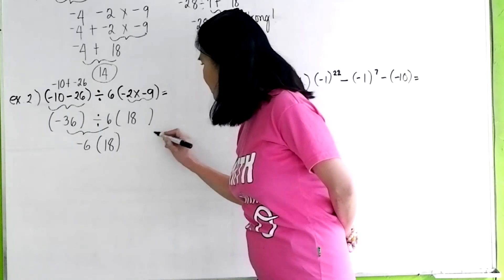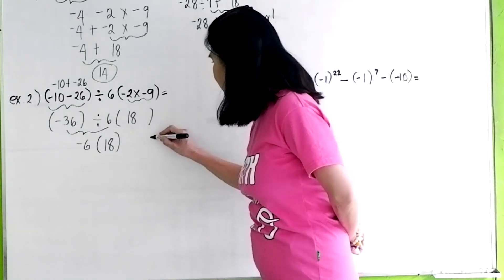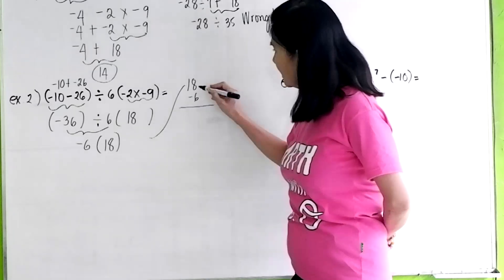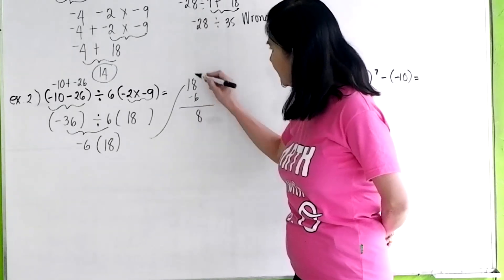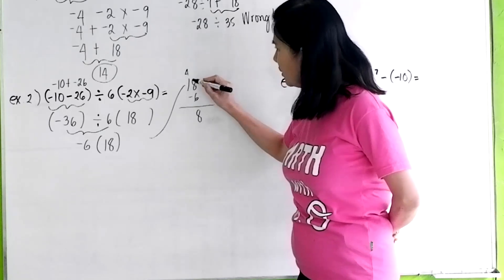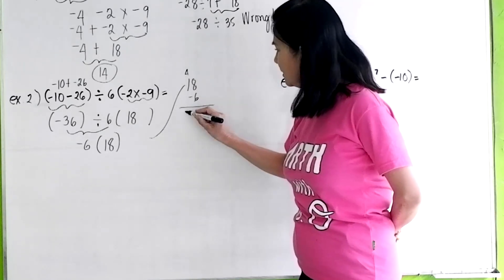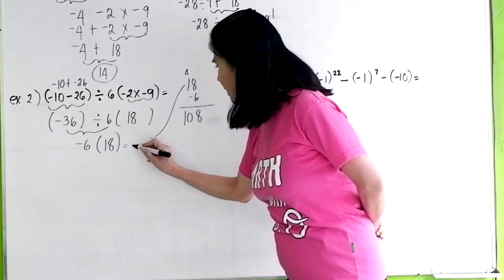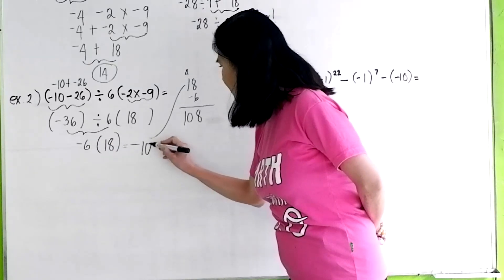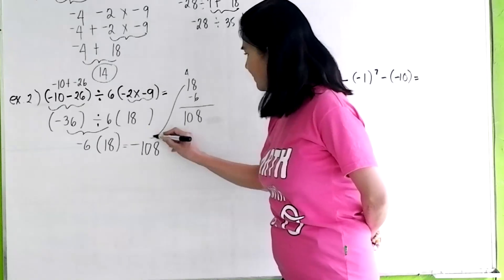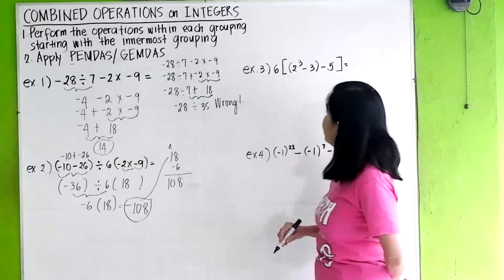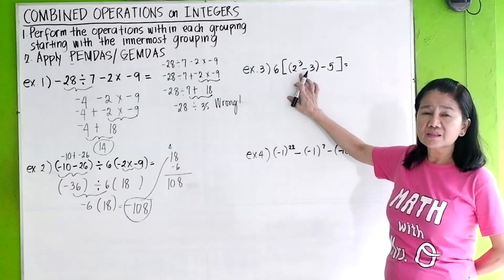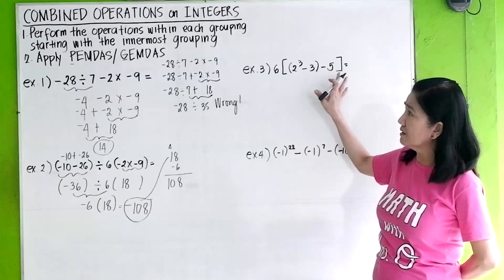So let's multiply that: 18 times negative 6 equals negative 108. This is negative times positive, which is negative 108.